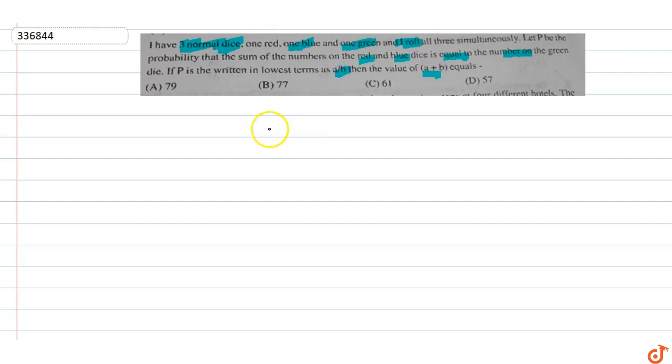With three dice rolled, total cases are 6³ = 216. Now we have the red die, blue die, and green die.